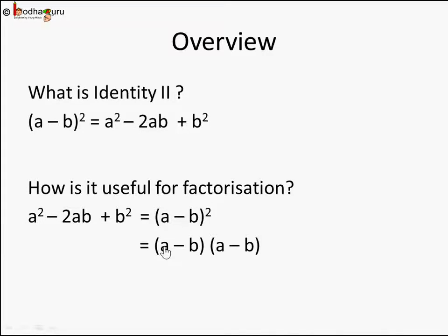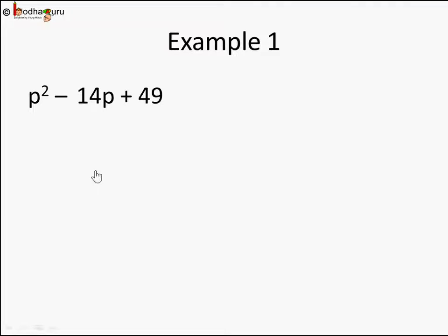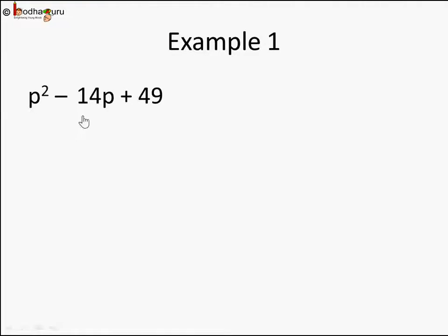Let's take an example and try to use identity 2 to factorize. We are given p square minus 14p plus 49. Before we apply identity 1, 2, or 3, we should check if we can see squares. Here we can see p square, and 49 is also a square — it's 7 square. Because there is a negative sign, identity 2 seems applicable.